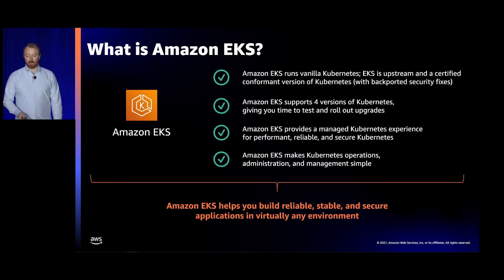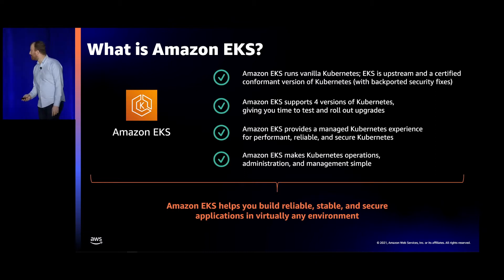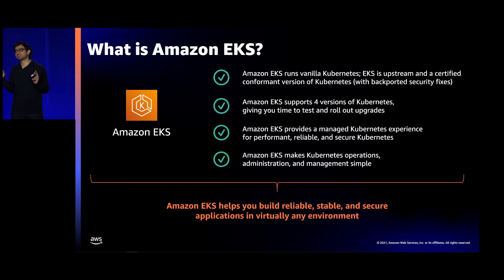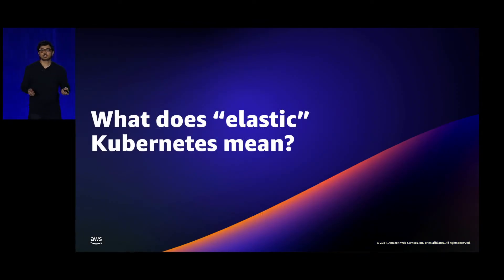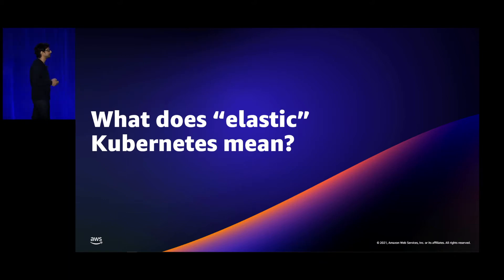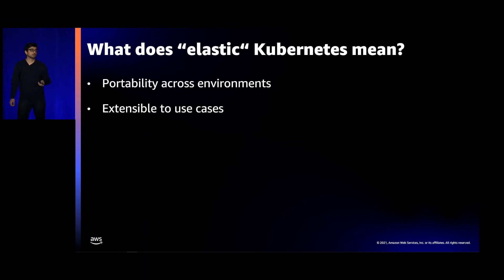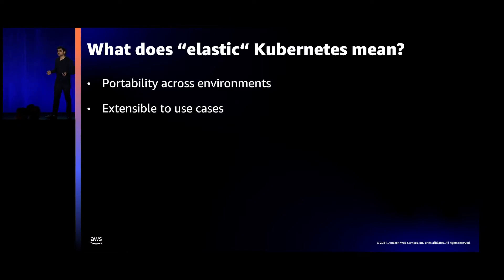I'll hand it over to Shyam, who's going to talk about what the 'elastic' in Elastic Kubernetes Service means, because he's been doing quite a bit of work on this over the last year. Over the course of several customer meetings, there are a few common themes that come up with respect to what customers think elastic means and what they want it to mean. Common themes include being able to run workloads across different environments, having the portability to do so, and also being able to extend Amazon EKS to run various kinds of use cases.